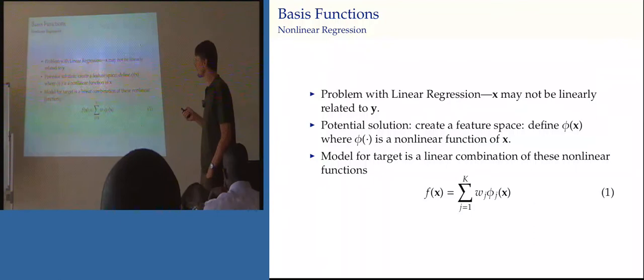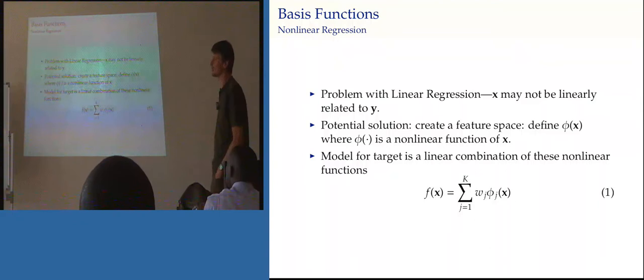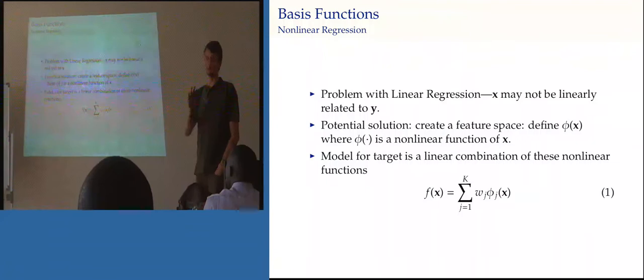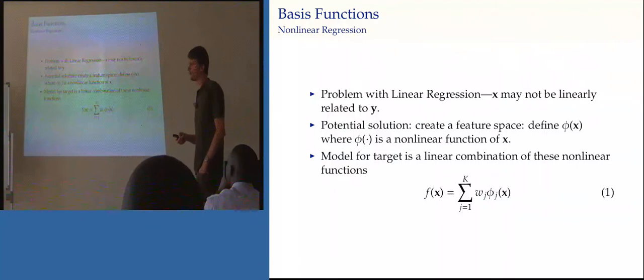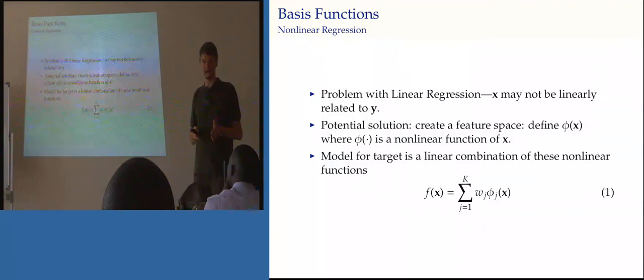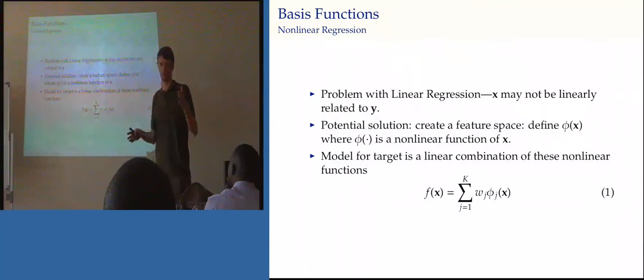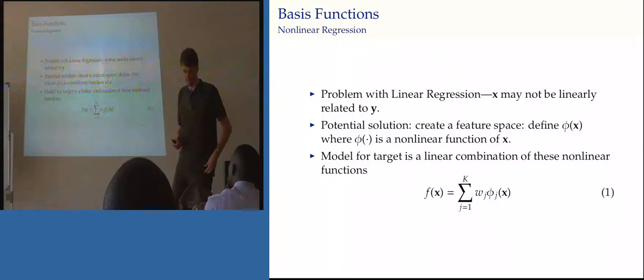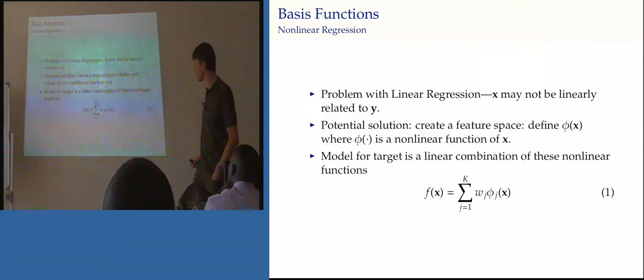The problem with linear regression is very often x is not linearly related to y, and I really don't like these extrapolations. Even if something's linear in the regime you're looking at, as you move out of that regime you can't extrapolate in that way. In machine learning we're often putting a model into a computer and forgetting about it — the computer isn't conscious that the model is valid only in a certain regime. We want the model to reflect that it's not valid outside that regime.